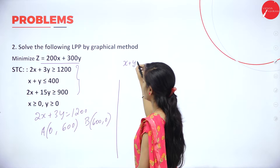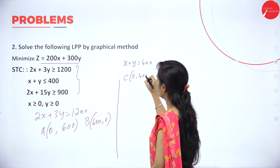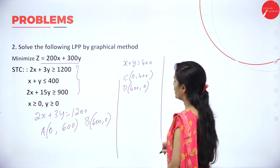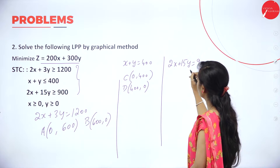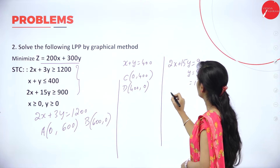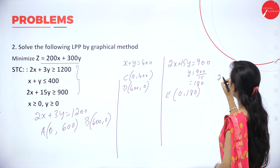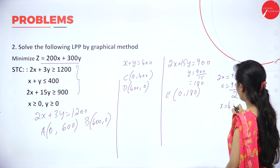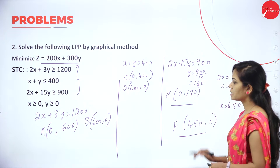The second constraint is x plus y equals 400. Put x equal to 0, y equals 180. Put y equal to 0, x equals 450, so point F is (450, 0). Here we got 6 point values.